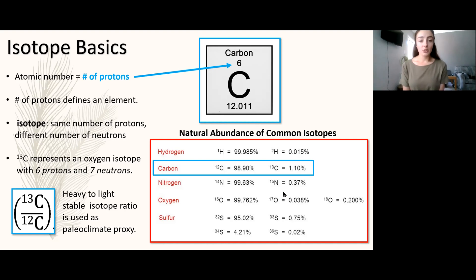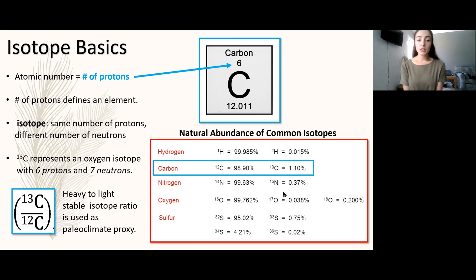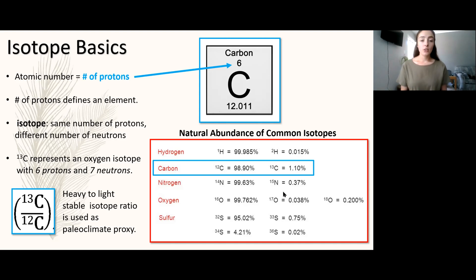In this table, the natural abundance of carbon-12 and carbon-13 is shown. Carbon-12 makes up the majority of natural carbon on Earth, and carbon-13 is much less abundant, but we can still detect it and therefore take a ratio of carbon-13 to 12. With this ratio we can understand certain environmental conditions, because the ratio is dependent on climatic and environmental factors. We always take the heavy over the light isotope ratio, never light over heavy.